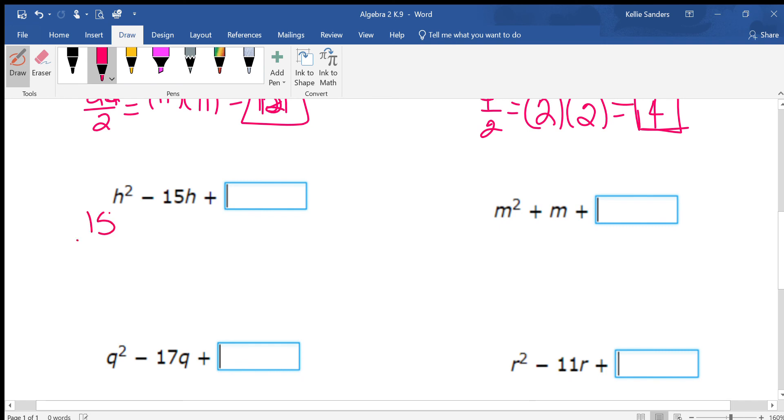All right. Now, 15 over 2. What happens? It doesn't reduce, does it? Do not make this a decimal. Do not put 15 divided by 2 in your calculator and get 7.5. Keep it. Square the top and square the bottom. Get 225 over 4.